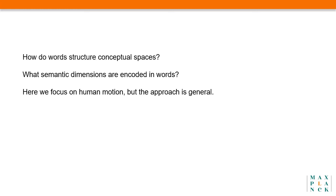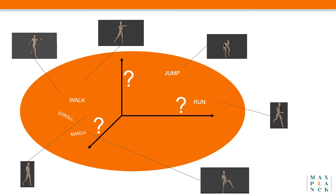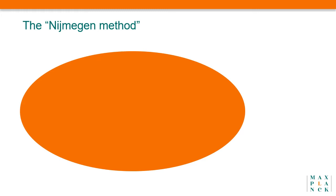How do words structure conceptual spaces? What semantic dimensions are encoded in words? Here we focus on human motion, but the approach is general. Imagine the space of all possible human motions — points in this space correspond to specific instances of motion. We are interested in how humans make sense of that space, and what the main conceptual dimensions are that we interpret as meaningful when perceiving human motion. To answer this, we look into the main dimensions encoded in motion verbs, as this should reveal important aspects of how we structure our experience.